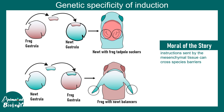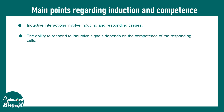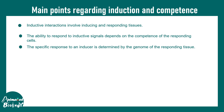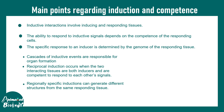To summarize: inductive interactions involve an inducing tissue and a responding tissue. The ability to respond to an inductive signal is known as competence. The specific response is determined by the genome of the responding tissue. Cascades of inductive events drive organ formation. Reciprocal induction involves two-way crosstalk. And regionally specific induction cues can generate different structures from the same responding tissue, as seen in chick feather development.